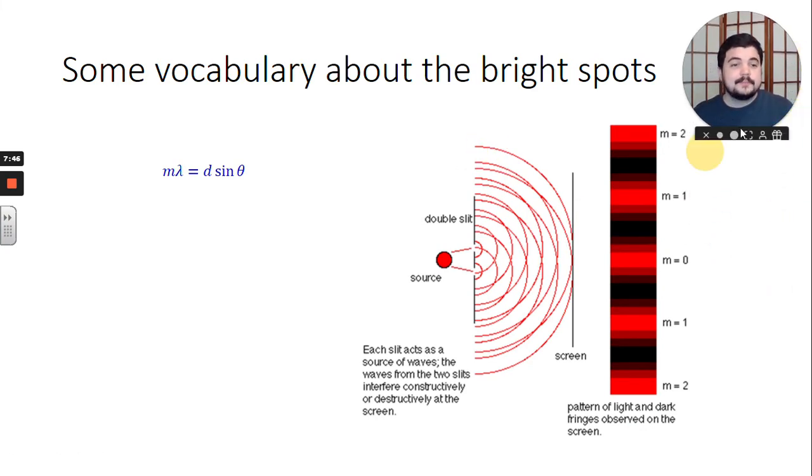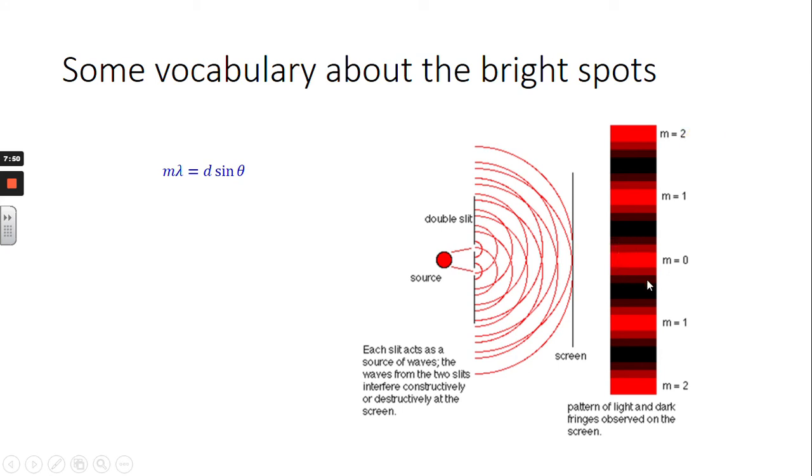So, what's going on here is m refers to which bright spot in our interference pattern we're talking about. The central bright spot is m equals 0, the next bright spot is m equals 1, the next bright spot is m equals 2, and so on. We get an m equals 1 on both sides of 0, we get an m equals 2 on both sides of 0.